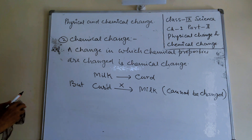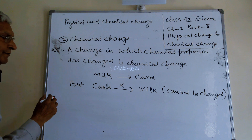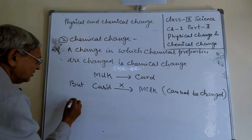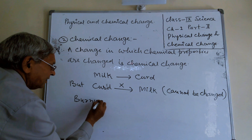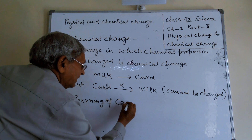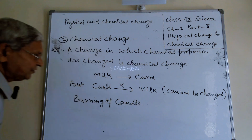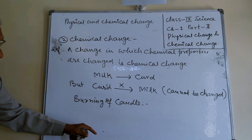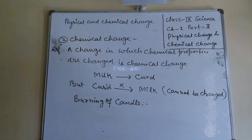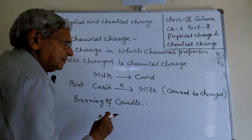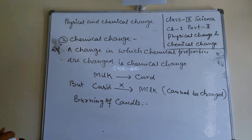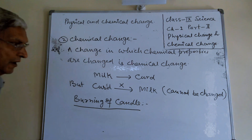This is a good example of chemical change because this example exists in your houses. I am taking more examples. Second example: burning of a candle. In burning of a candle, chemical properties are changed. After burning of a candle, it changes into so many other forms. So burning of a candle is also an example of chemical change.